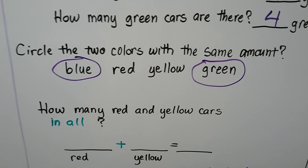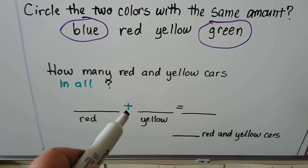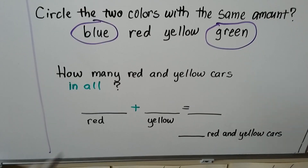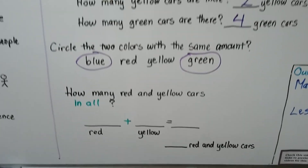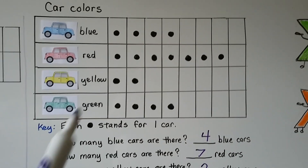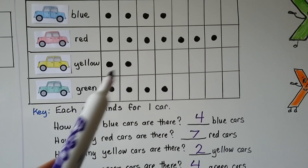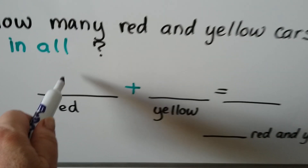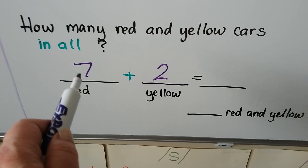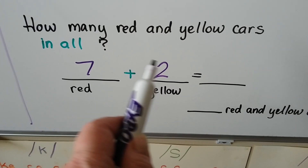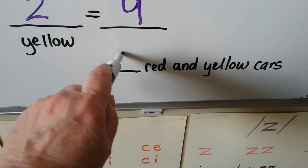How many red and yellow cars in all? Our clue word is 'in all' — that tells us we're going to use addition to get a sum. We need red and yellow cars; the word 'and' helps us too. There are seven red cars and two yellow cars. We're going to add seven plus two. We can start at the seven, the larger addend, and count on: seven, eight, nine. There are nine red and yellow cars in all.